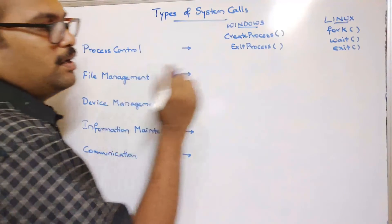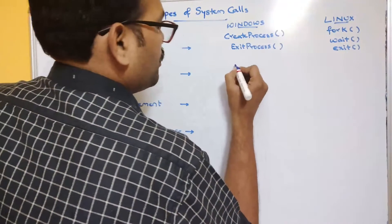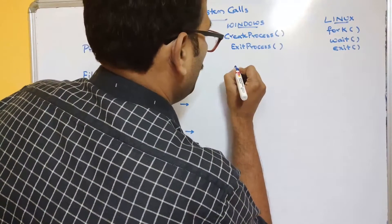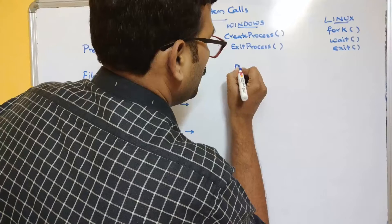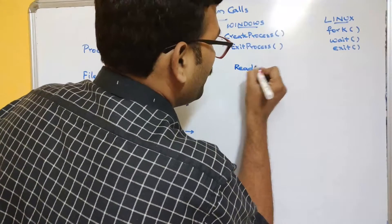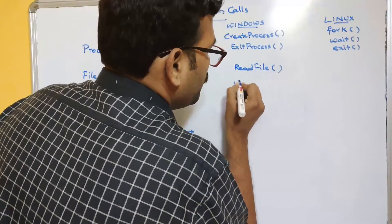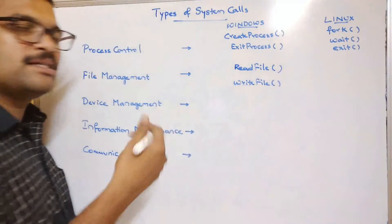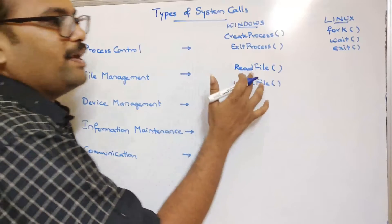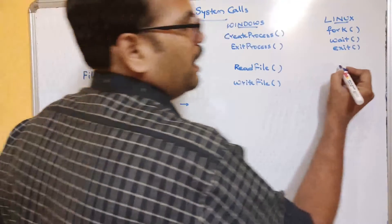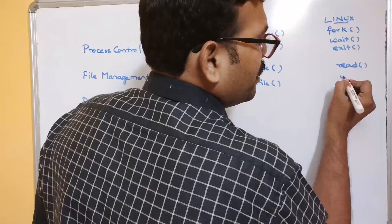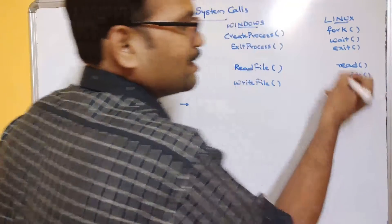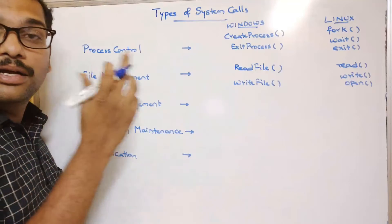Coming to file management: in Windows we use read file and write file to perform read and write operations. In Linux, we simply use read, write, and open. These are the different system calls available in Linux for file management.